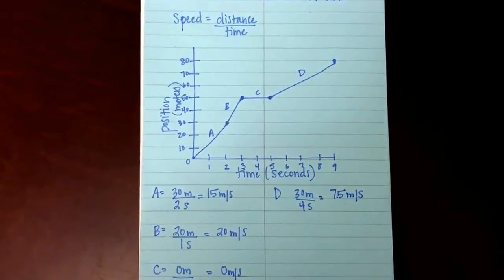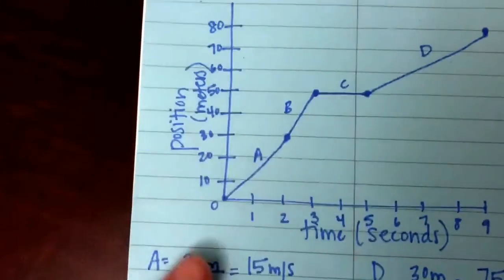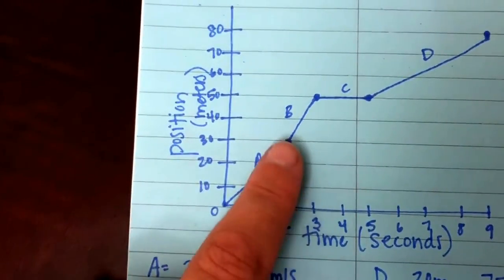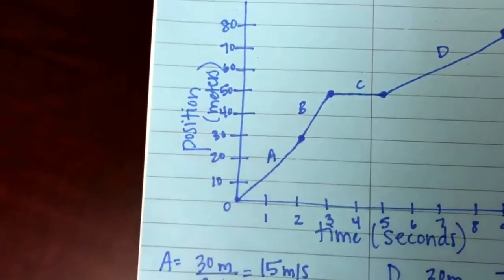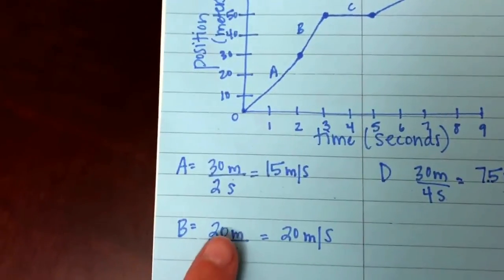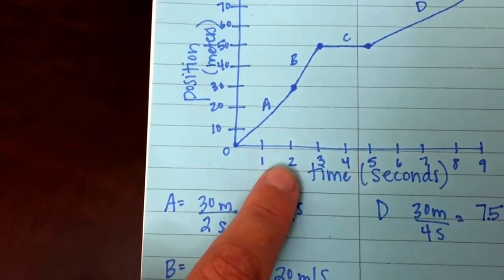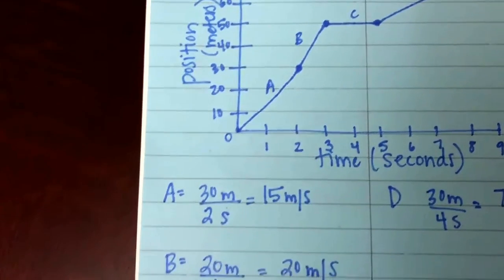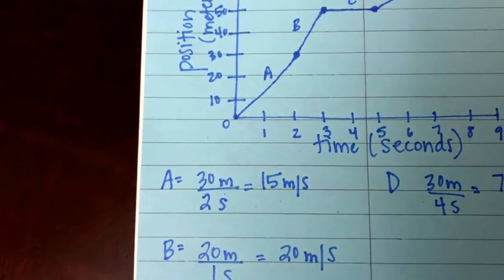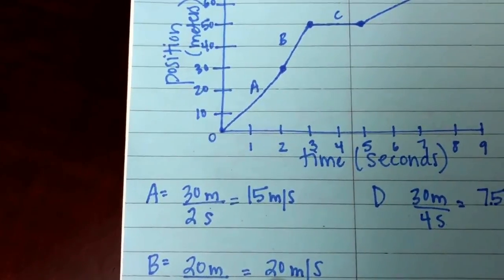Okay, now we have line segment B where it starts at 30 meters and ends at 50 meters, which gives us 20 meters traveled. The time started at 2 seconds, ended at 3 seconds, which was 1 second traveled. So 20 divided by 1 is 20 meters per second.